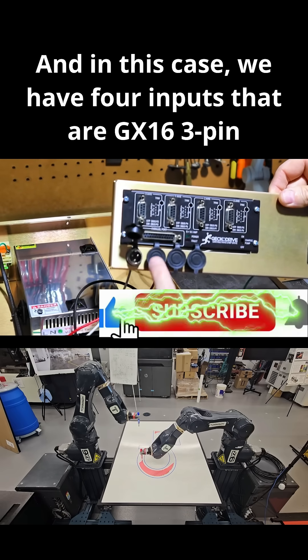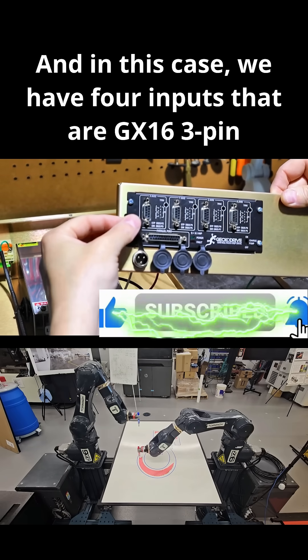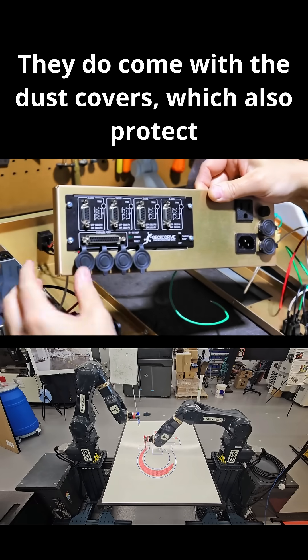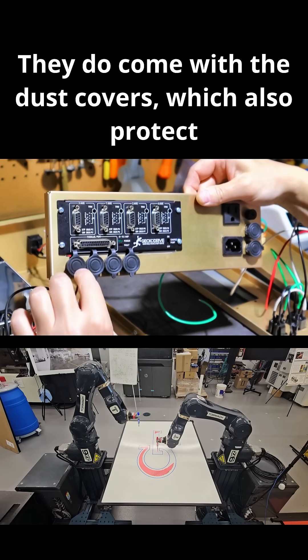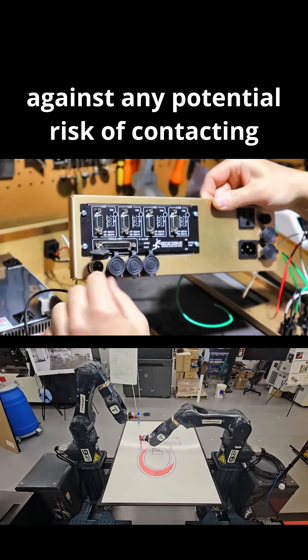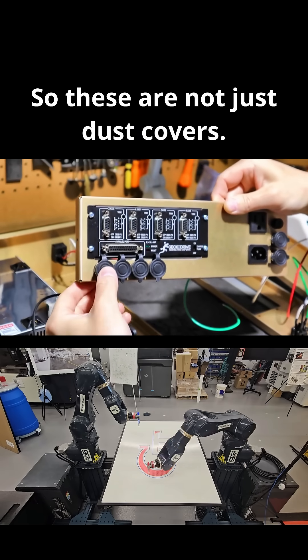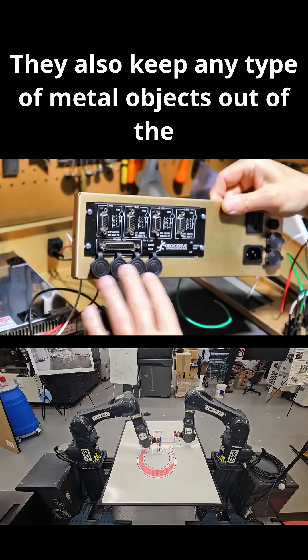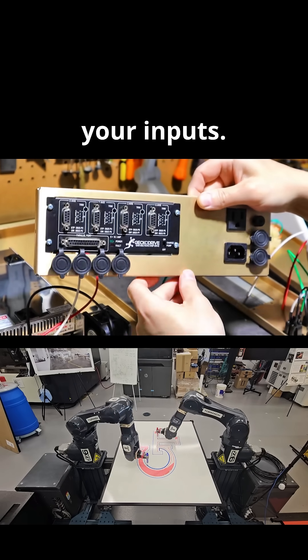And in this case, we have four inputs that are GX-16 3-pin panel mount. You can see them right there. They do come with the dust covers, which also protect against any potential risk of contacting those pins. So these are not just dust covers. They also keep any type of metal objects out of the way that could actually short out your inputs.